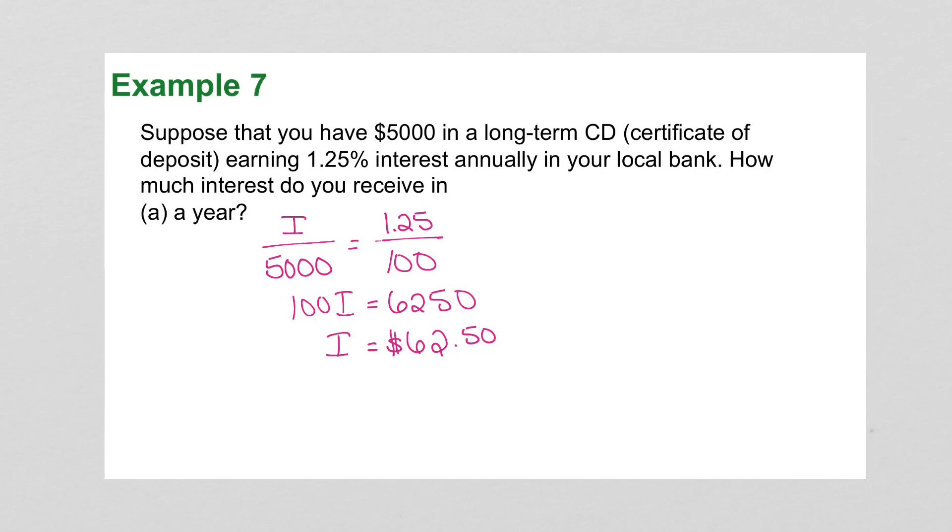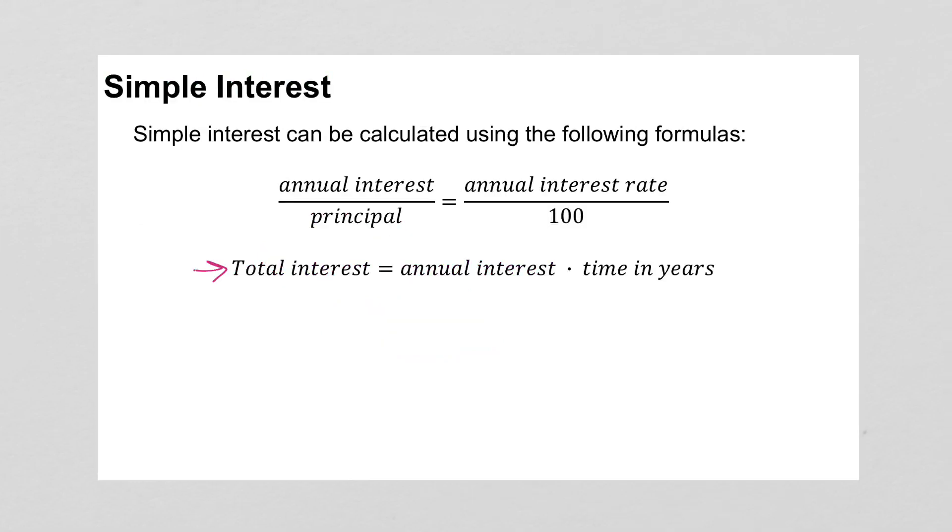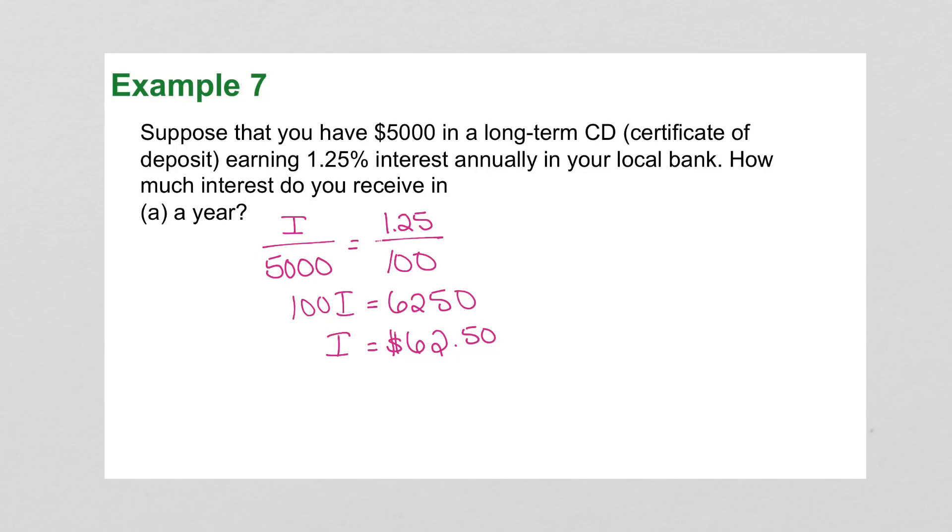Now, because this is 1 year, we don't have to multiply by 1, as it said in this formula here. Because multiplying by 1 would just get us the same thing. So this is, in fact, the amount of interest that would accumulate in 1 year. If it were more than a year, then we'd multiply. If it's 5 years, we'd multiply by 5.